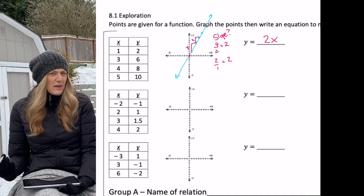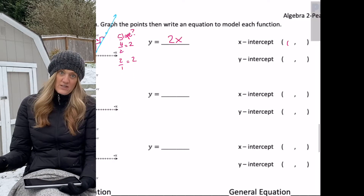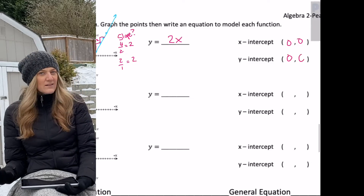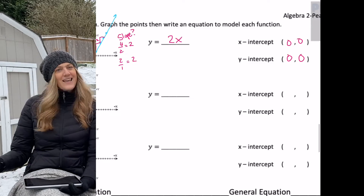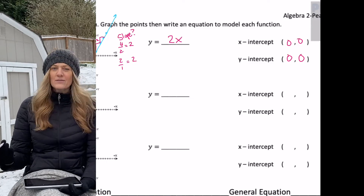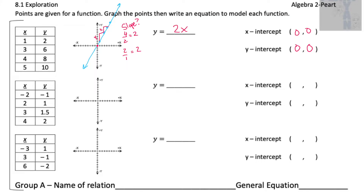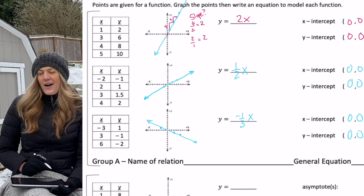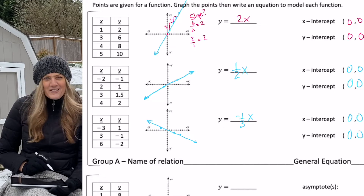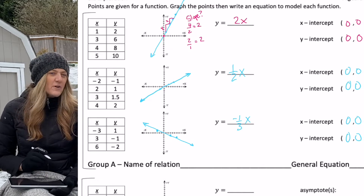So y equals 2x. What would my x-intercept be? The origin, zero zero. What would the y-intercept be? The exact same thing, zero zero. Try the next two and see if you can figure out the equations.